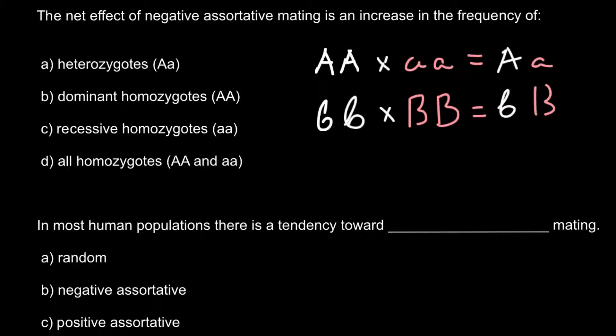So positive assortative mating leads to homozygosity, whether it can be homozygous dominant locus or homozygous recessive, and negative assortative mating between people belonging to two different groups leads to heterozygosity. And this is answer A.